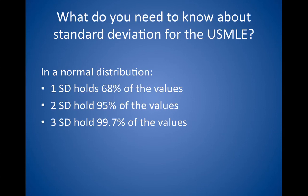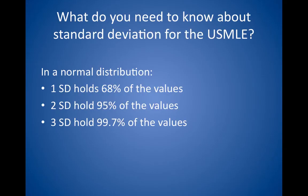A classic question gives you the mean and standard deviations and asks you what percentage of values will be above a given value. For example, if the mean score on a test is 80 and the standard deviation is 5, 68% of the scores will be within 5 points of 80 — scores of 75 to 85 — and 95% of the scores will be within 10 points of 80, scores of 70 to 90. The question may ask what percentage of scores are over 90. The answer is 2.5% because 2.5% of the scores fall below 70, and 2.5% of the scores are over 90. Variations of this question are common.